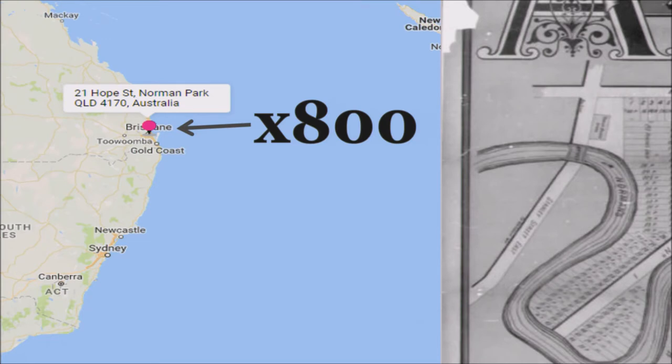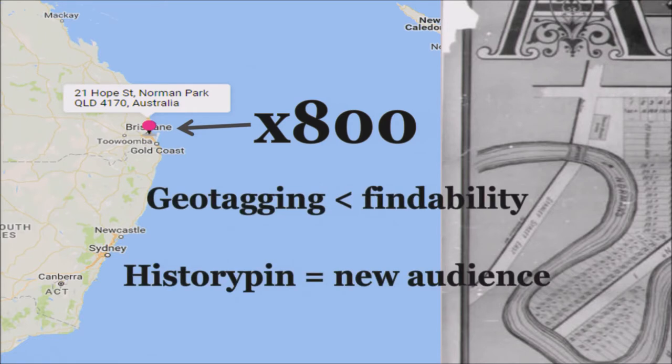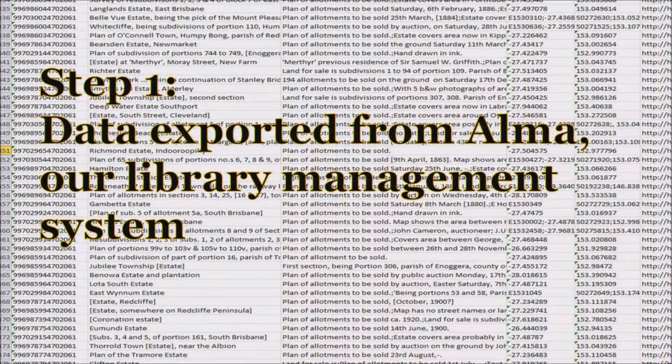Our project goal was to pin 800 real estate maps from our collection to History Pin. For us, the drivers are that geo-tagging the maps will increase their findability, and using History Pin as the platform will introduce them to a new audience and also change the way that people can interact with the collection.